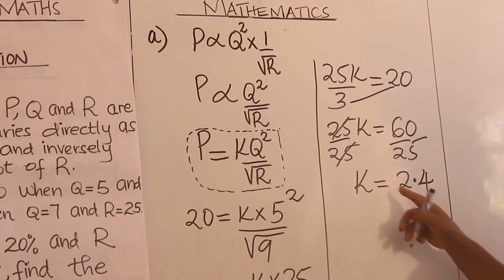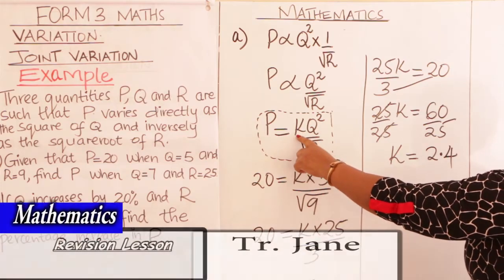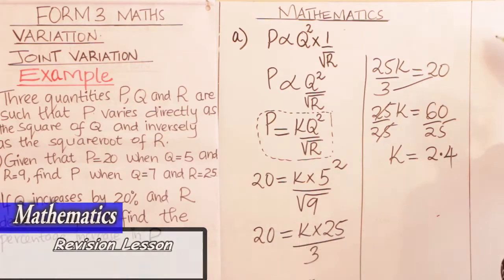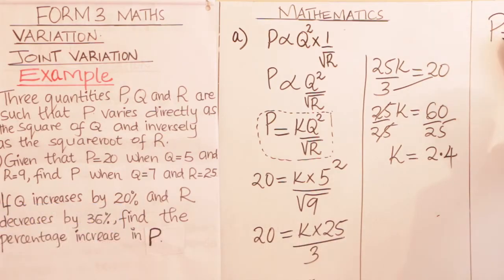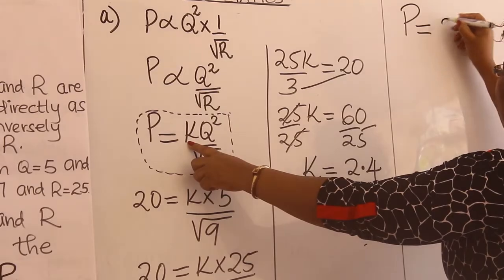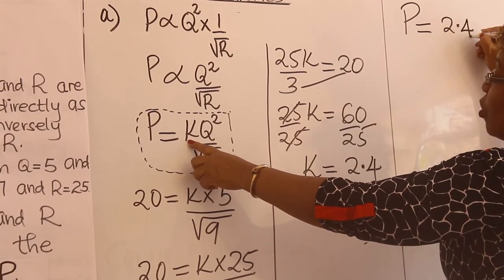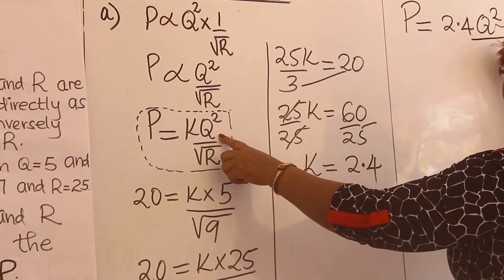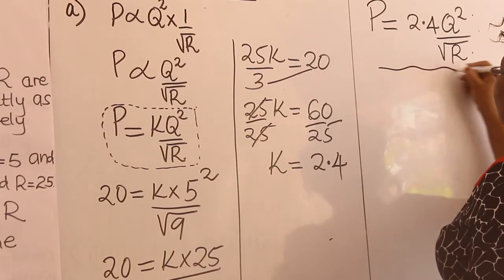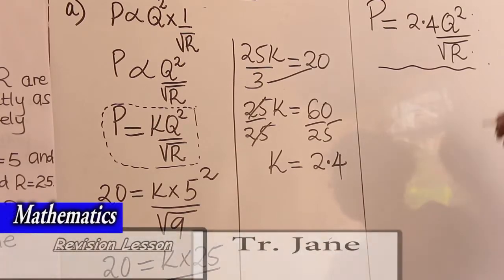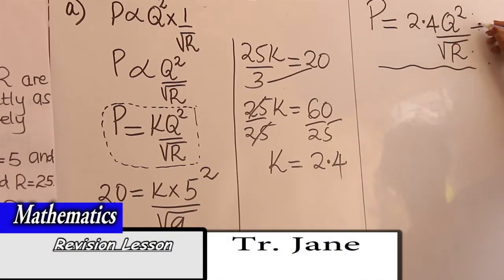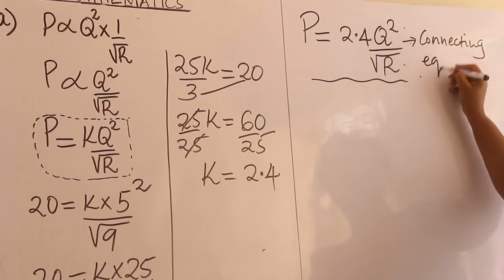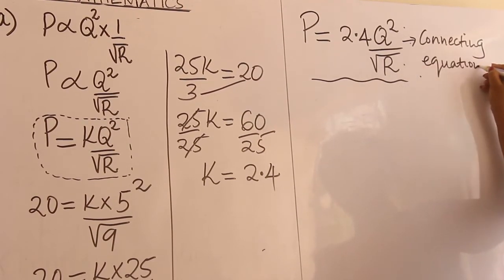After getting your K, substitute it back to get what we call the connecting equation. Therefore, P = 2.4Q² divided by square root of R. This is the connecting equation.